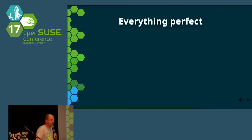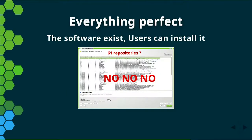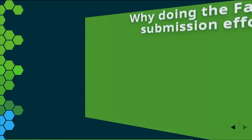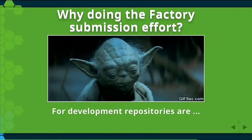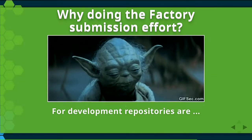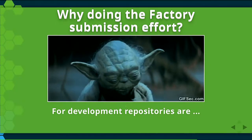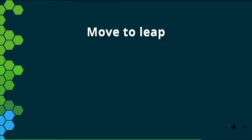So everything seemed perfect — the software exists, users can install it. But this is a real screenshot of a user installation showing 61 repositories, and this mess is what we want to fix. The next step is to do the factory submission effort, because Richard started saying we should not impose additional repositories on users — our repositories are for development only. So the last step was: let's move this package to Leap.